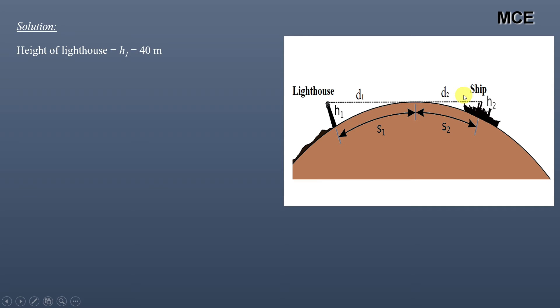Height of the lighthouse is given as h1 = 40 meters and height of the observer's eye is h2 = 6 meters.